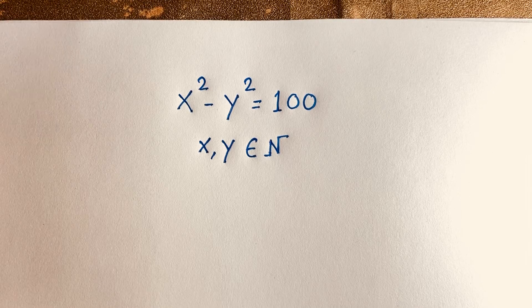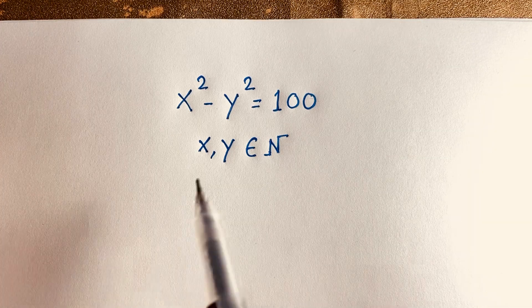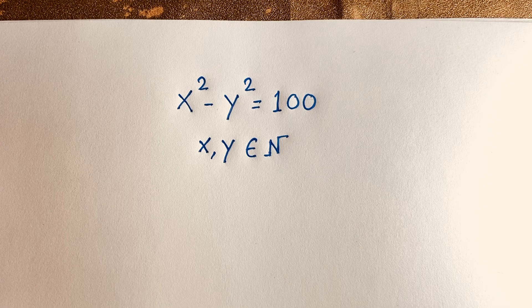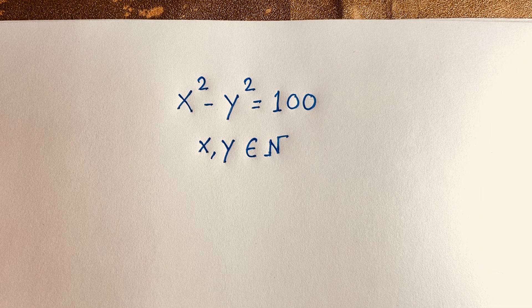Hello everyone. In this video, we have solved a nice Math Olympiad question. This question is x squared minus y squared is equal to 100, where x and y are natural numbers. We'll find out the values of x and y. So let's start.